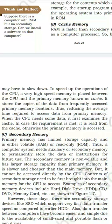When the CPU needs some data, it first examines the cache. In case the requirement is met, it is read from the cache; otherwise, the primary memory is again accessed.